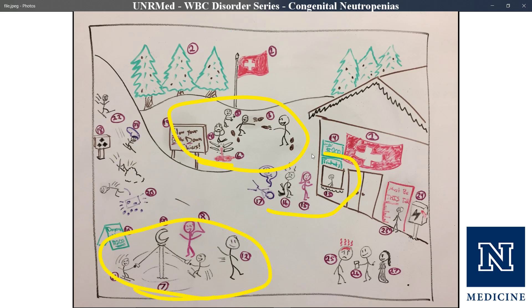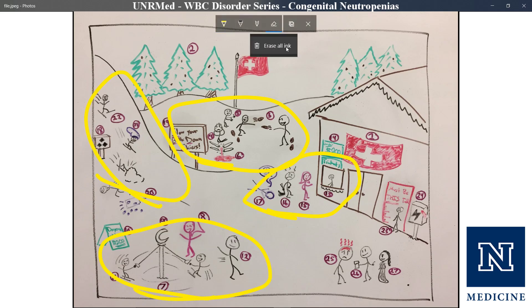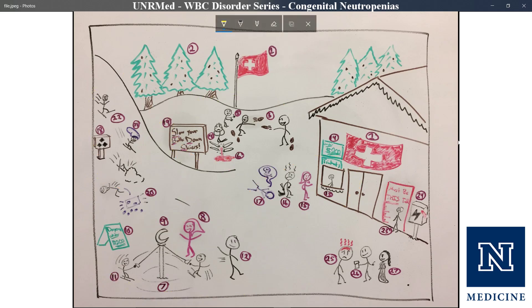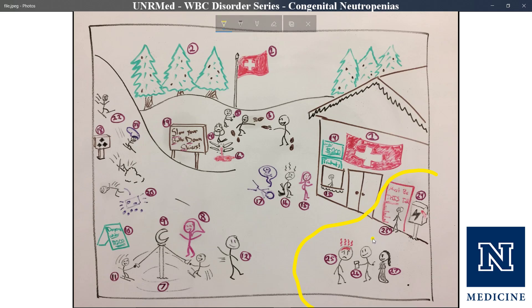That covers Schwachmann Diamond Syndrome and all four main congenital neutropenias: Fanconi Anemia, Cyclic Neutropenia, Kostmann Syndrome, and Schwachmann Diamond. Now in this corner, we have the treatments for these congenital neutropenias, which are roughly the same across all of them. The first-line treatment is G-CSF (granulocyte colony-stimulating factor), represented by a little kid trying to grow taller to meet the height requirement for skiing — a recurring symbol for G-CSF in these videos.